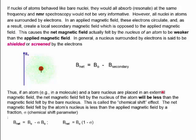The net magnetic field felt by the atom's nucleus is less than the applied magnetic field by a fraction, symbolized by sigma. We can calculate the net magnetic field experienced by the spinning nucleus using this equation: it equals the strength of the applied magnetic field minus sigma times the strength of the applied magnetic field.